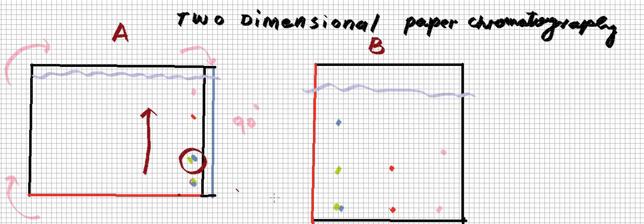Now we will have a second solvent system and we will dip this sheet of paper in that second solvent system or mobile phase. The second mobile phase will move in this direction till this point.